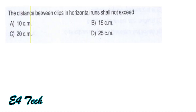The distance between the two saddle clips in horizontal runs shall not exceed 10cm. That is option A.